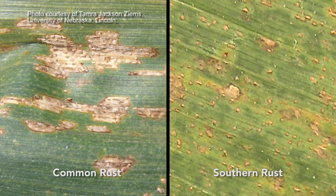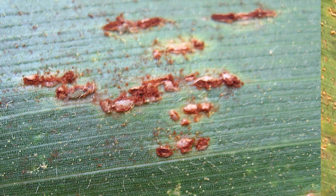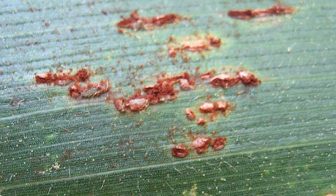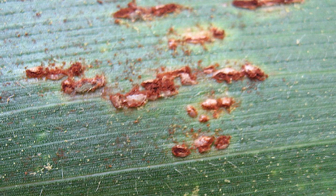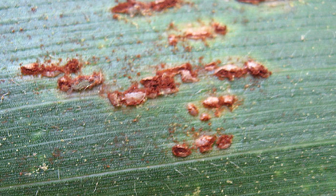Common rust can look a lot like southern rust, as the color variations in the spores vary quite a bit. The only sure way to differentiate between these diseases is in the laboratory, where under the microscope we look at spore shapes and which ones are predominant — that is the sure way to diagnose those diseases.